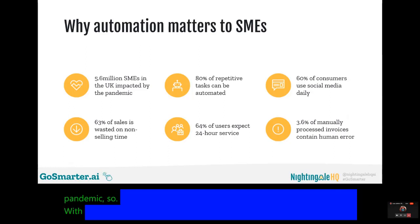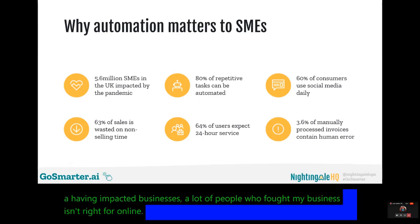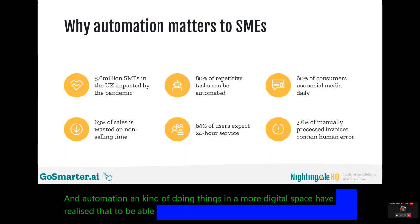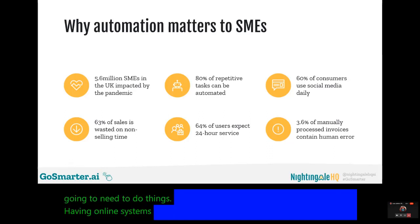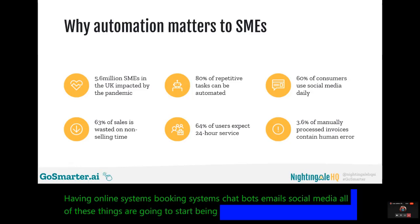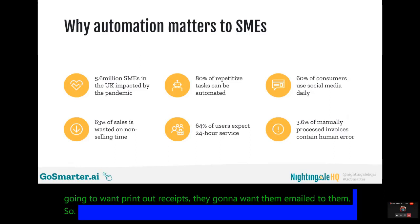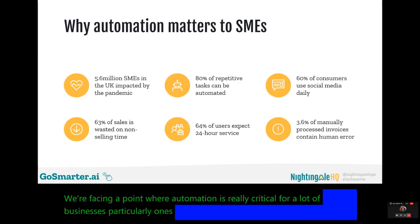With COVID-19 having impacted businesses, a lot of people who thought their business wasn't right for online automation and doing things in a more digital space have realized that to be able to keep going post-pandemic, having online systems like booking systems, chatbots, emails, social media — all of these things are going to be more important. People aren't going to want printed receipts; they're going to want them emailed. So we're facing a point where automation is really critical for a lot of businesses, particularly ones that maybe didn't need a digital space and automation before.